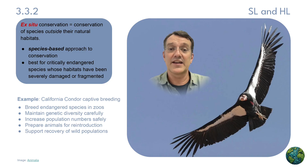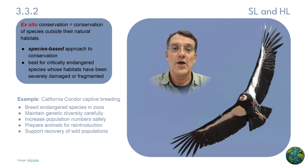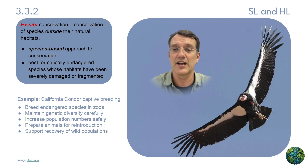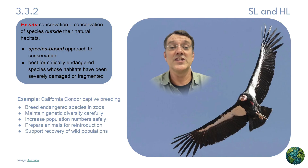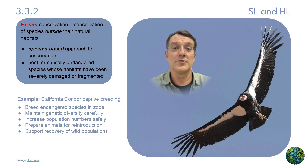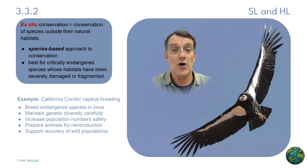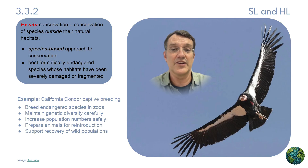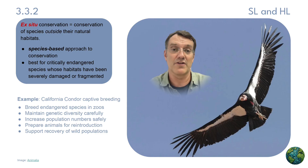Another example of ex-situ conservation is the California condor captive breeding program. This approach enables conservationists to breed endangered species in controlled environments, maintain genetic diversity carefully, increase population numbers safely, and prepare animals for eventual reintroduction to natural ecosystems. For some critically endangered species, these programs represent their last chance for survival.